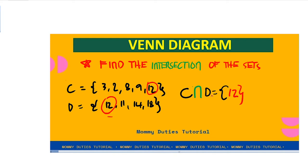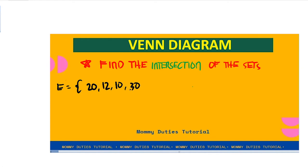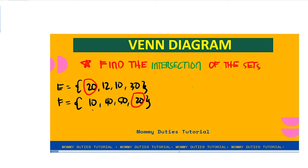Let's try another one. We have Set E composed of elements 20, 12, 10, and 30, while Set F is equal to 10, 40, 50, and 20. We're going to look for the common elements — we have 20 and 10. So the intersection of E and F is the elements 20 and 10.